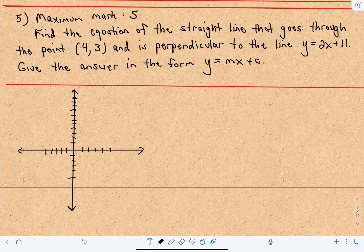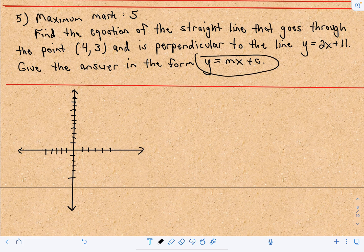So here we have to find the equation of the straight line that goes through the point and is perpendicular to the line, and we're going to give the answer in the form, or slope-intercept form.